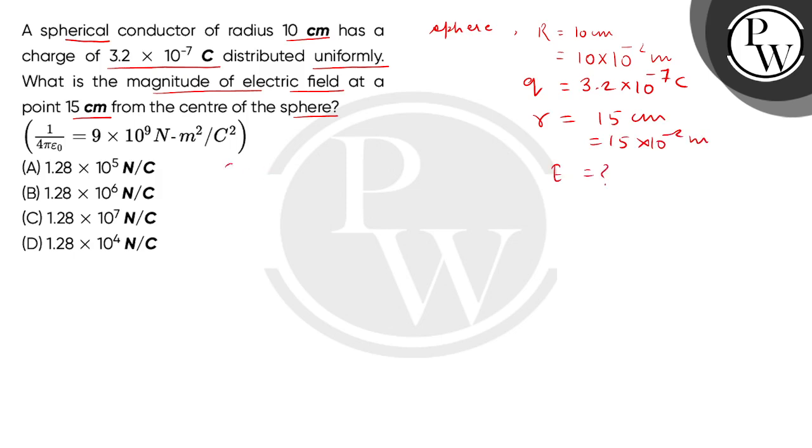So electric field के लिए हम लोग equation लेते हैं 1 by 4 pi epsilon naught q divided by r square. तो ये value हमें गिवन है SI system में 9 multiplied 10 to the power 9. चार्ज की value है 3.2 multiplied 10 to the power minus 7 and r की value है 15 multiplied 10 to the power minus 2 and इसका square.